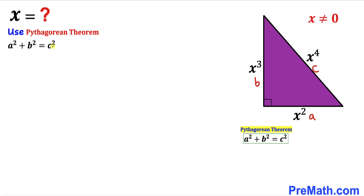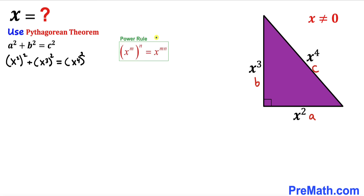Let's fill in the blanks in this Pythagorean formula. In our case, a is x², so (x²)² plus b is x³, so (x³)², equals c which is x⁴, so (x⁴)². Now let's recall the power rule.